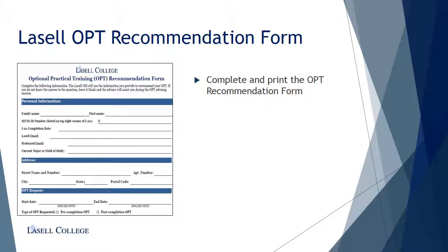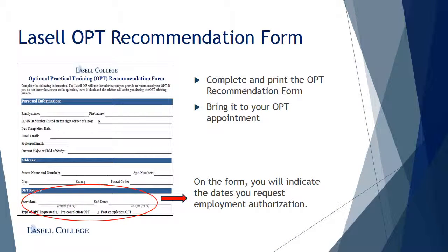The first item is the LaSalle OPT Recommendation Form. This form is needed to tell the advisors at the LaSalle OIS the OPT dates you have chosen. Please download the form from the OIS website, complete, and print the form. On the form, you will indicate the dates you request employment authorization. For pre-completion OPT, you may choose any dates you wish to start and end your employment. You may work part-time for up to 20 hours per week while school is in session and more than 20 hours per week during the summer or official school breaks.